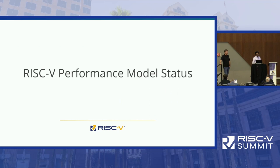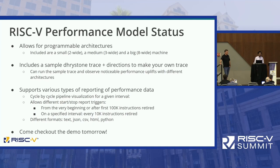So what's the status of the model today — what can you do with it if you check it out right now? We already have three sizes of machine: a small core (2-wide), a medium core (3-wide), and a big core (8-wide). You can use any of these today with the model. It includes a sample Dhrystone trace that you can run through these different architectures, and you can see how the performance changes — IPC actually gets better, stalls reduce, and so on.